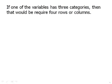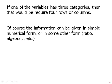If one of the variables has three categories, that would require four rows or four columns, because we need one for each category as well as one for the total. Of course, the information can be given in simple numerical form, as we had in the last problem, or in some other form, ratios or algebraic, something like that. There's many different ways that the numbers can be given.